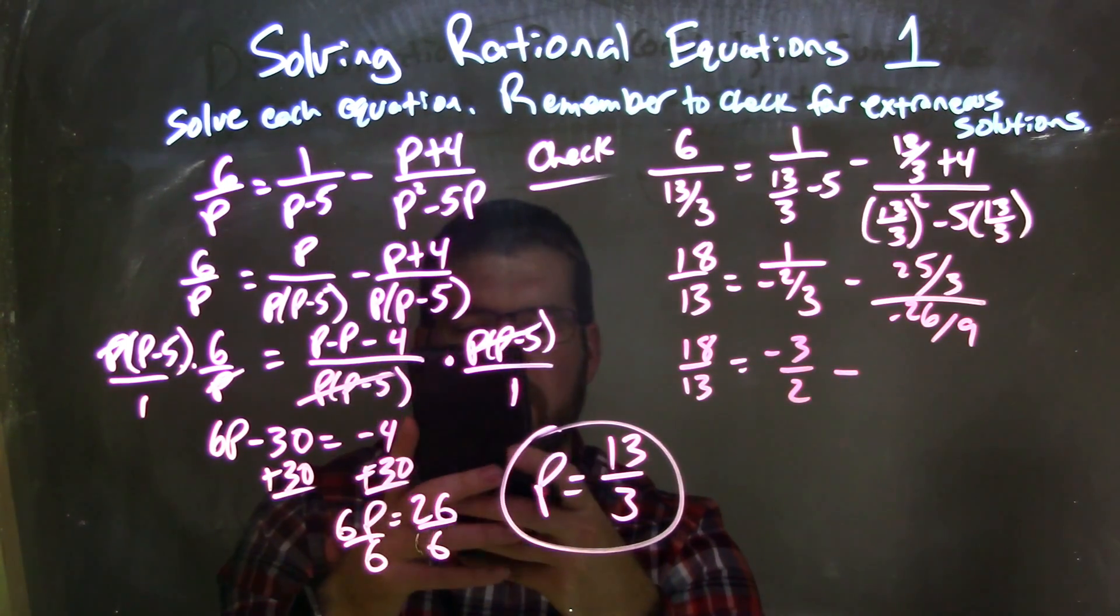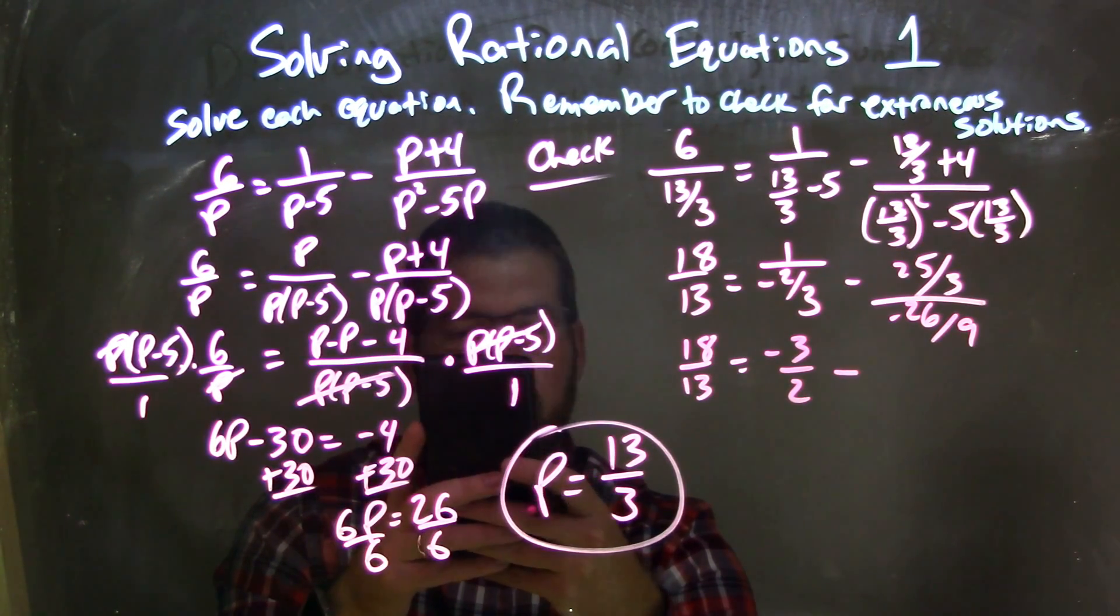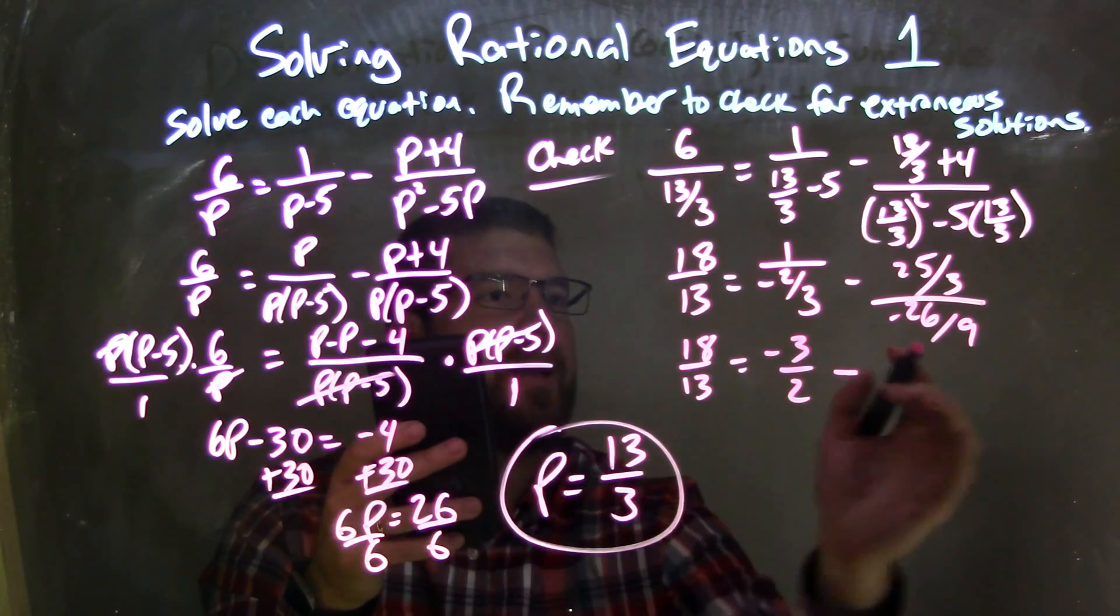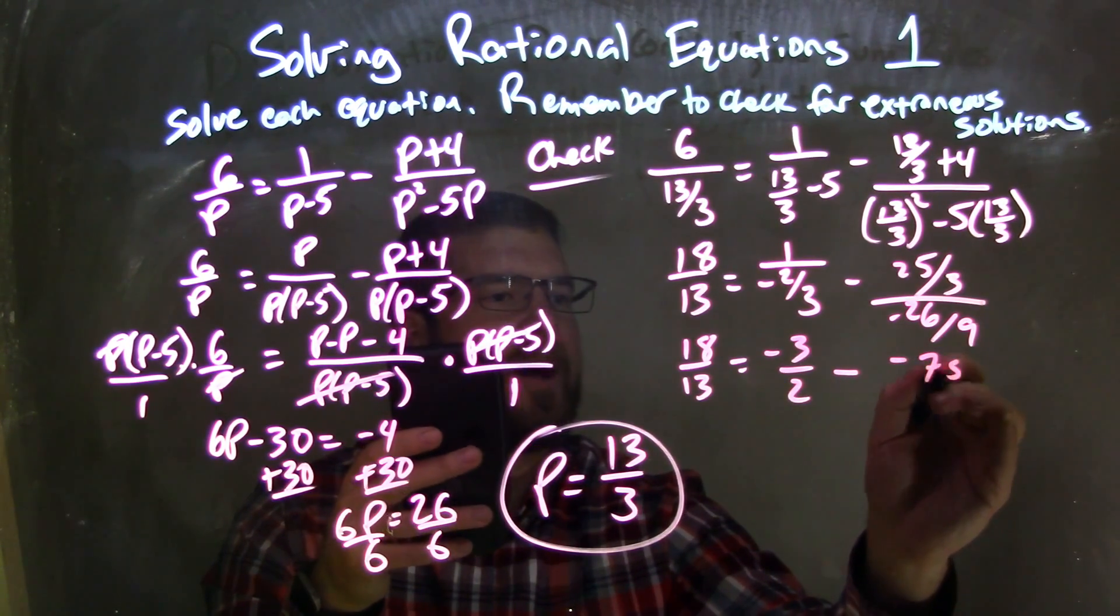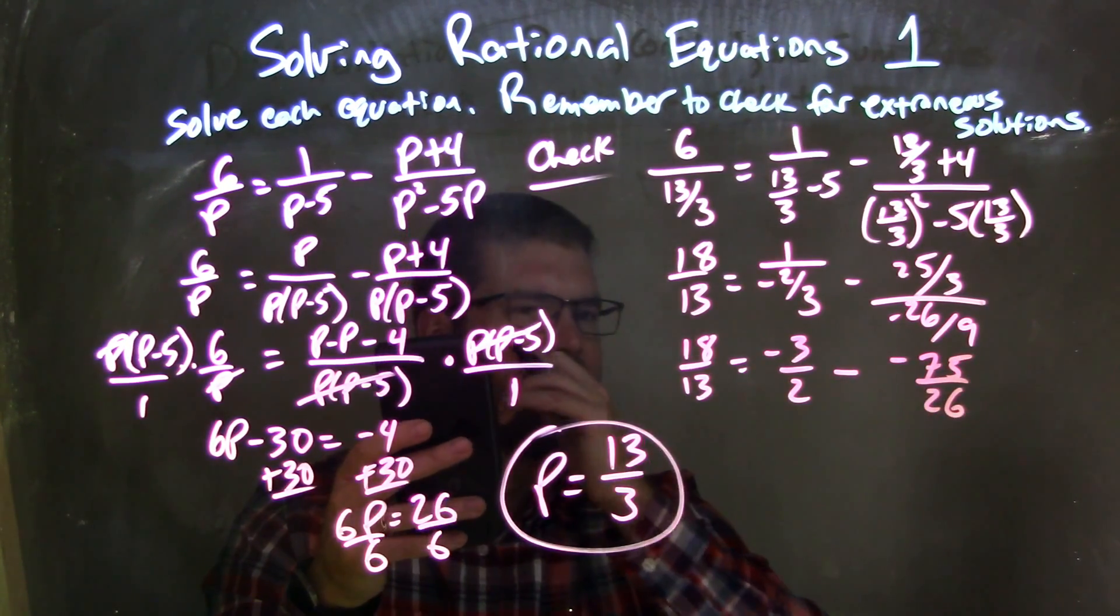Minus here, and what's 25 thirds divided by a negative 26 ninths? And we have here a negative 75 over 26.